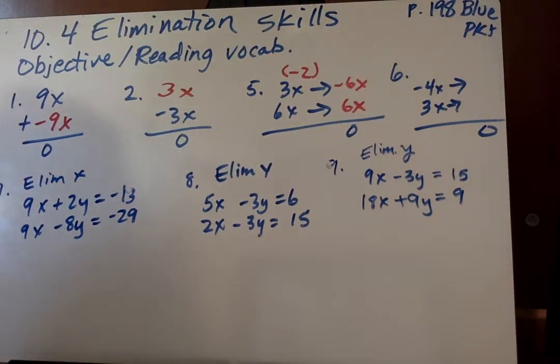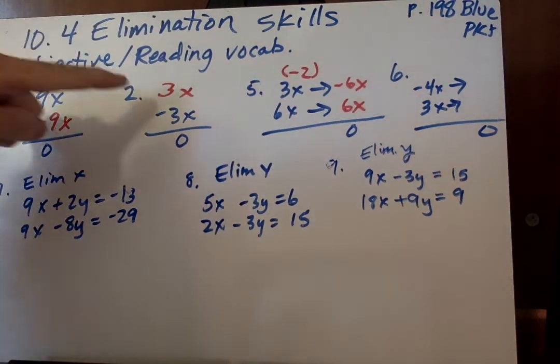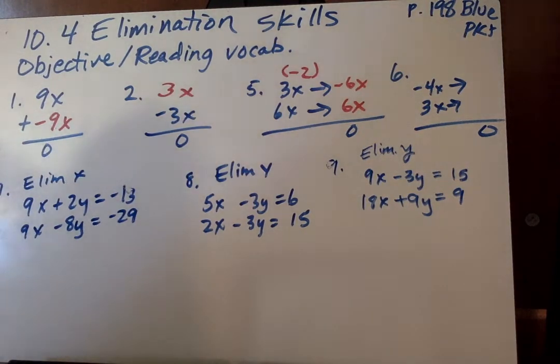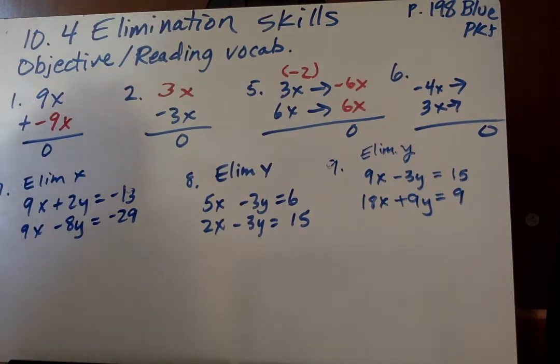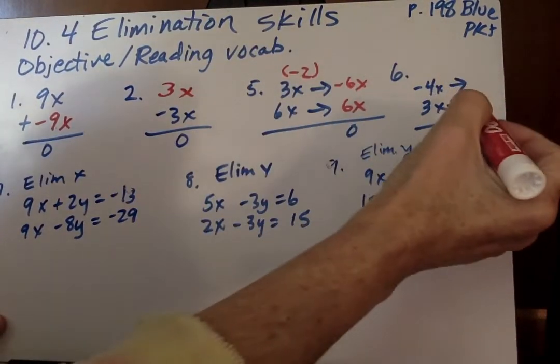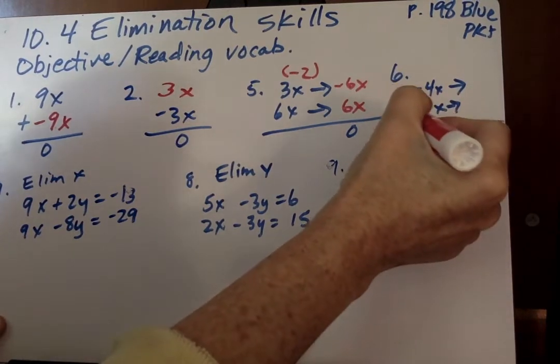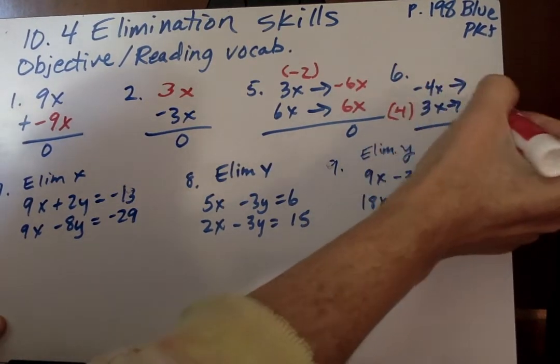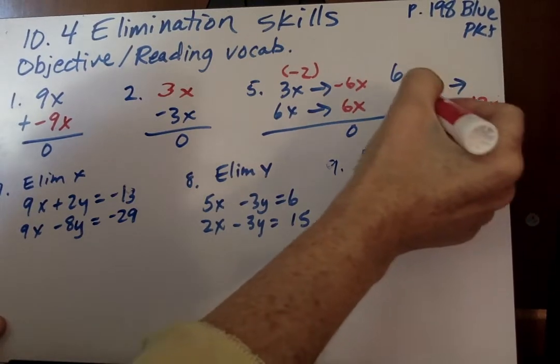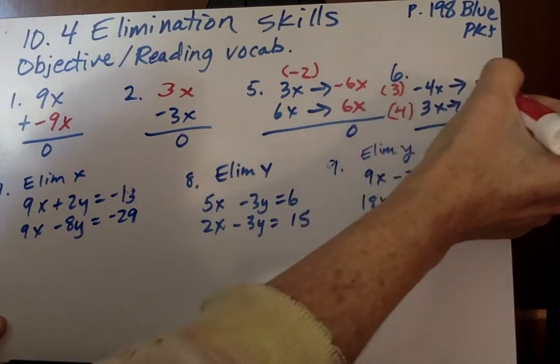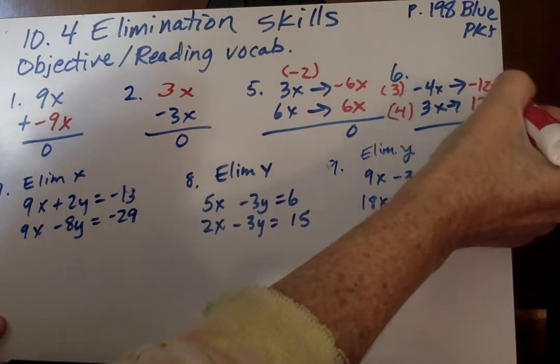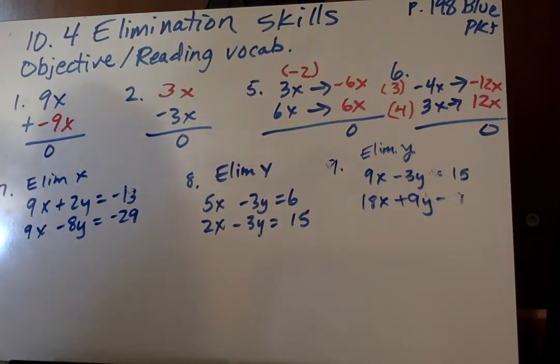So we want to make sure we find our least common multiple if they're not already opposites, and we need to make one opposite. On number 6, we have negative 4x and 3x. What is a common multiple of 4 and 3? It's 12. So we're going to multiply this side by 4 and get 12x, and we're going to multiply this by 3 and get negative 12x. So negative 12x plus 12x equals zero.